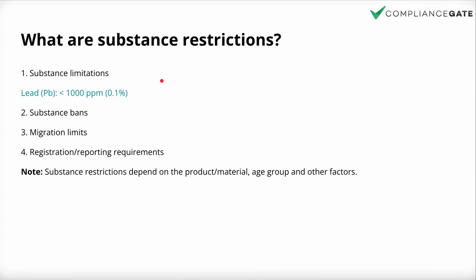So what are substance restrictions and the different types? A substance restriction can be a limitation — for example, lead is restricted to 1,000 ppm based on weight. That means the material in question can contain lead at that concentration, but if it's above that limit then it is no longer compliant and you cannot sell that product. Some substances are completely banned — there's no limit, they simply cannot be present in the product.